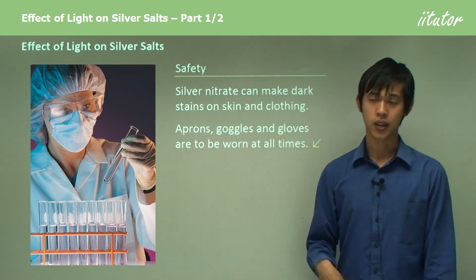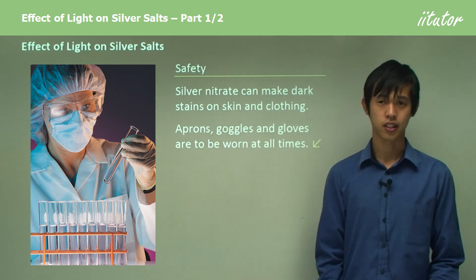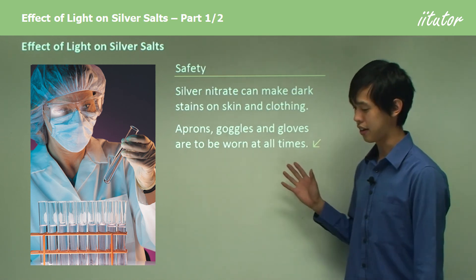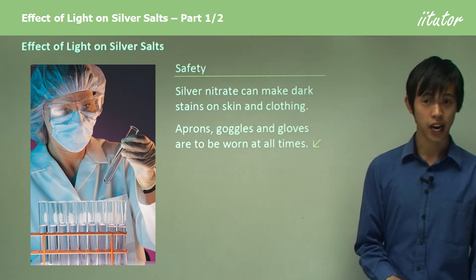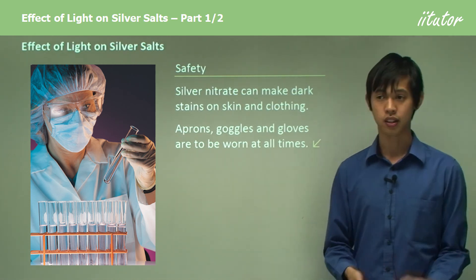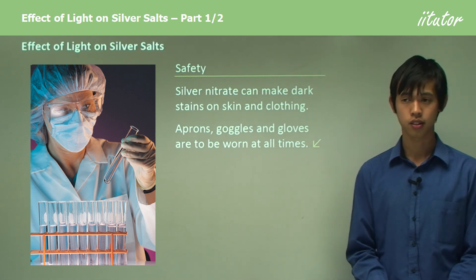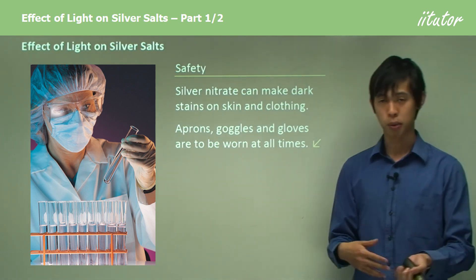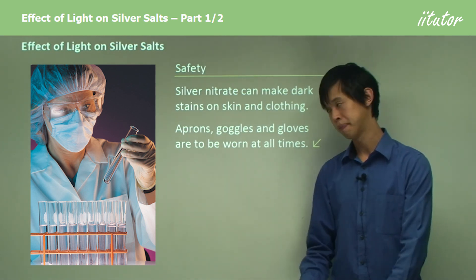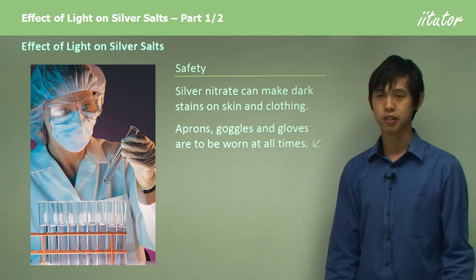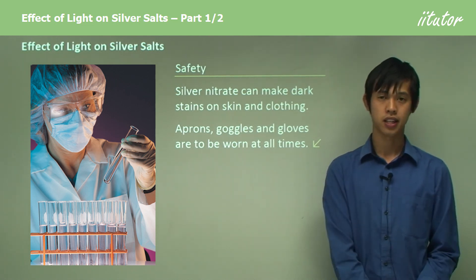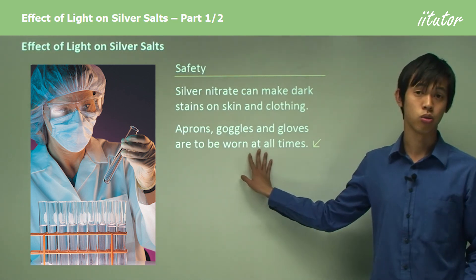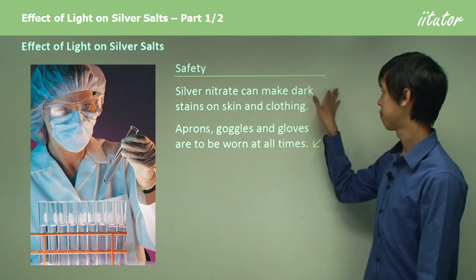That concludes today's lesson on this first-hand investigation. We've looked at the effect of light on silver salts — white crystals turn purple, then black — and we've covered the method for preparing these substances and how to carry out the experiment safely.